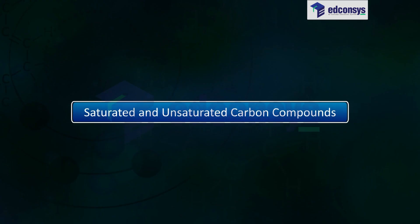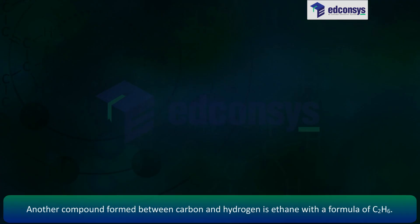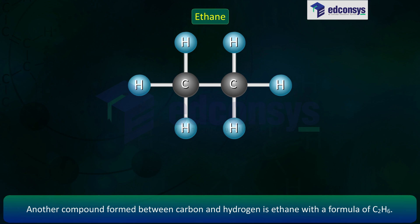Saturated and unsaturated carbon compounds. Another compound formed between carbon and hydrogen is ethane with a formula of C2H6.